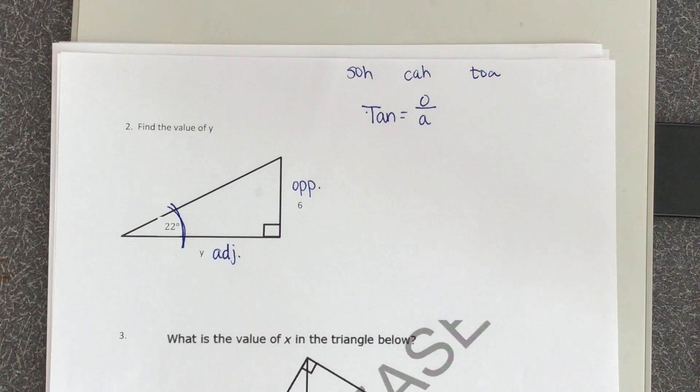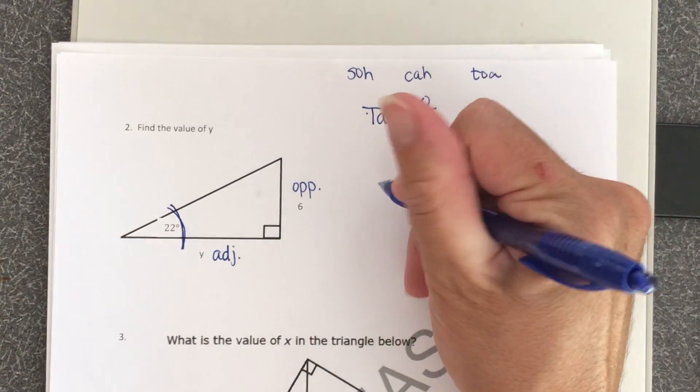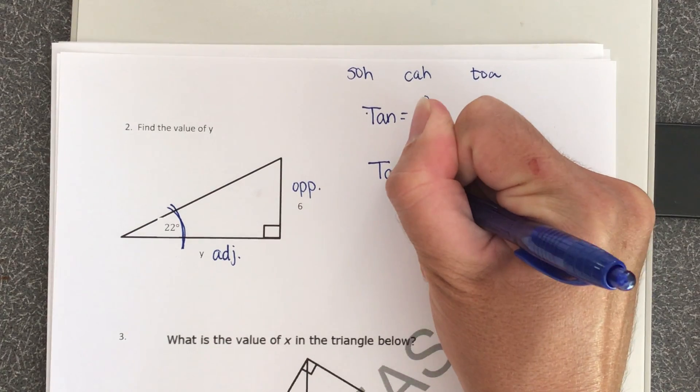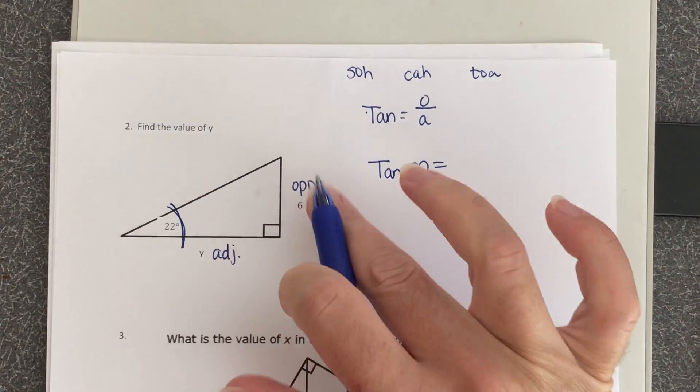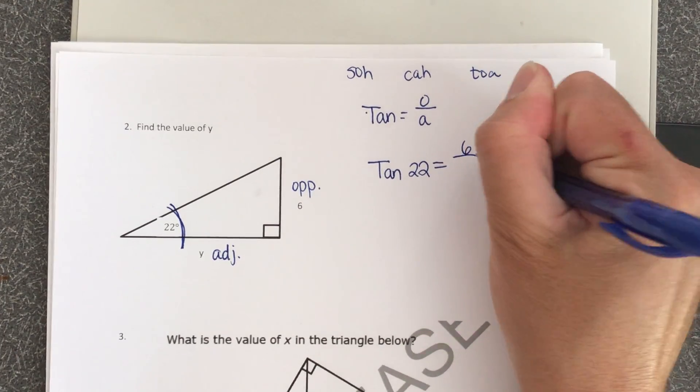Okay, so now we're going to set it up. It's always going to go tangent followed by your angle measure. So tangent 22 is equal to opposite over adjacent.